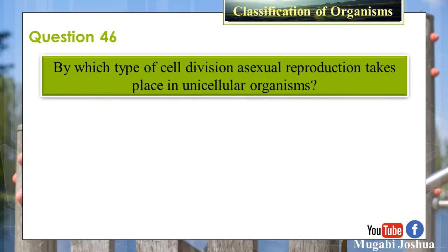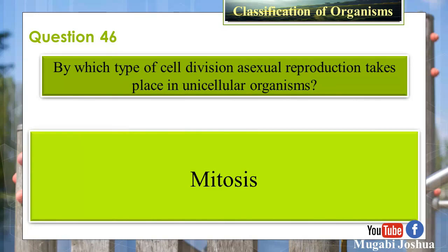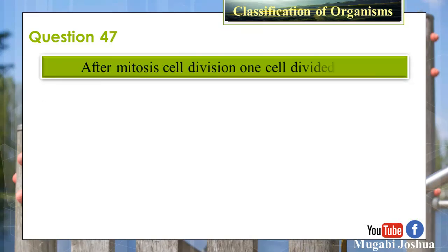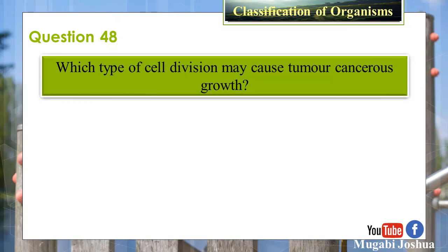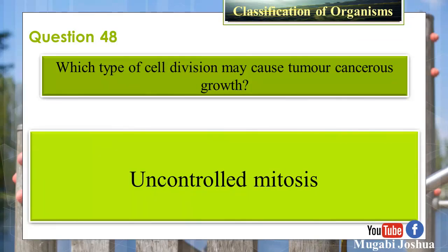Question 46: By which type of cell division does asexual reproduction take place in unicellular organisms? Answer: Mitosis. Question 47: After mitosis, one cell divides into two daughter cells in which the number of chromosomes is equal to the parent cell. Question 48: Which type of cell division may cause tumor or cancerous growth? Answer: Uncontrolled mitosis.